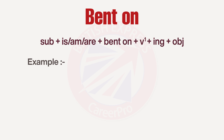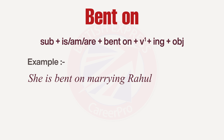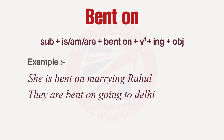Let's have an example. Suppose he has decided to marry Rahul. So how can I say that? We say: 'He is bent on marrying Rahul.'